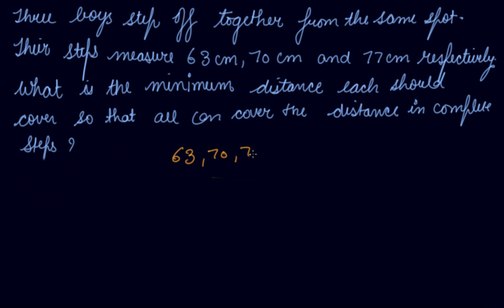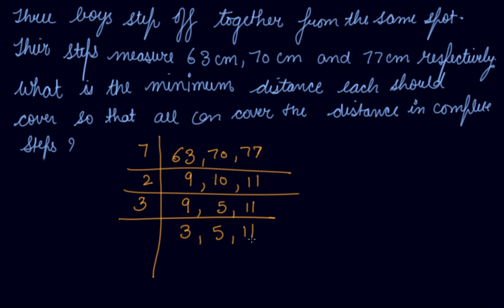63, 70, and 77. The common prime number that divides them is 7, giving us 9, 10, and 11. Now we can start dividing by 2—it's not divisible, so 9 remains as it is, giving 5 and 11. Now we take 3, giving us 3, 5, and 11. Then 3 again, giving 1, 5, and 11.